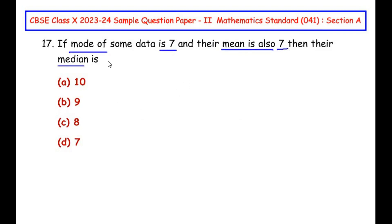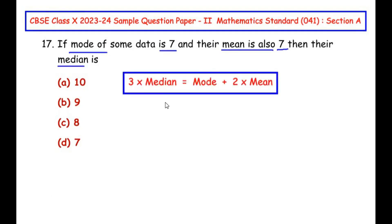In this question we have to know a relationship between the mode, median, and the mean. So let me write down the formula. The relationship between the mode, the mean, and the median is given as 3 times median is equal to mode plus 2 times mean.